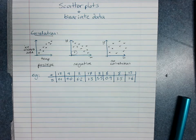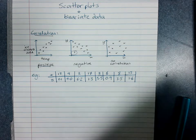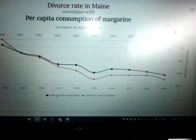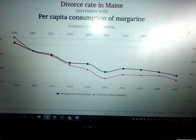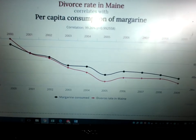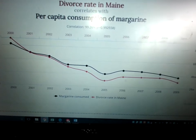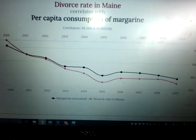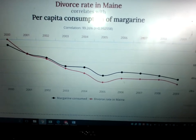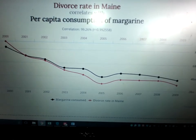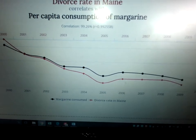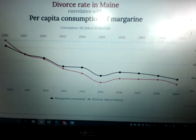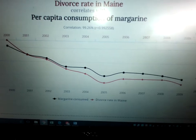The divorce rate in Maine correlates with per capita consumption of margarine. There's no way that those are causative. Eating more margarine does not cause divorces. Eating less margarine does not cause fewer divorces. It's just a coincidence. Sometimes this happens. Sometimes they're both caused by something else.